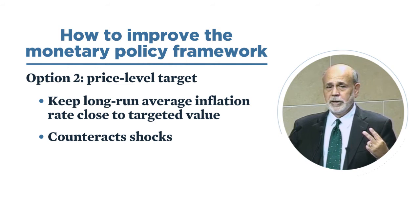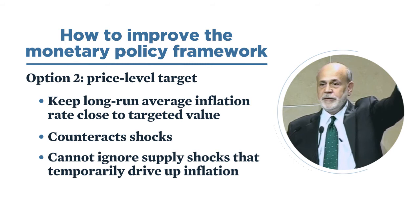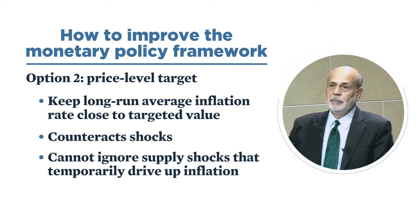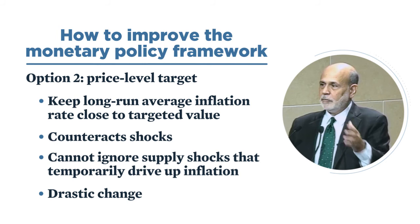There are two disadvantages to price level targeting. First, as Olivier mentioned, you also have to run the offsetting policy away from the zero lower bound — if you have a big oil price shock when away from ZLB, you must tighten very strongly to get inflation below target to offset that shock. The other problem is that it's a big change in framework, and staying within something like our current framework would save a lot of complexity and confusion.